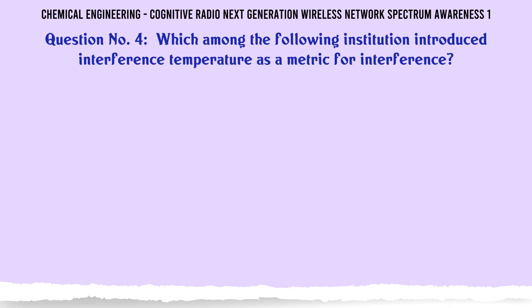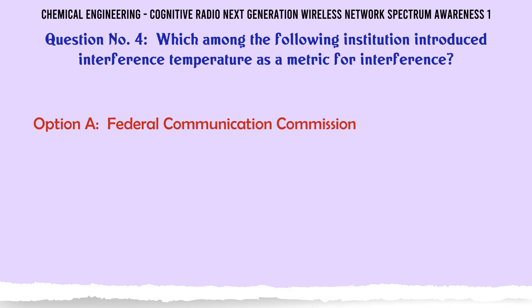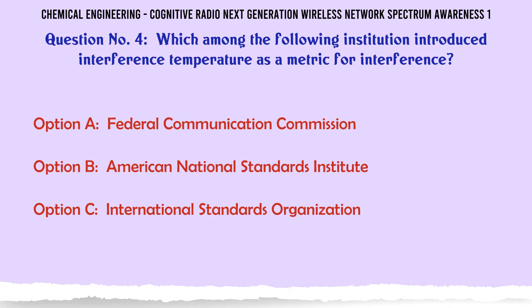Which among the following institution introduced interference temperature as a metric for interference? A. Federal Communication Commission. B. American National Standards Institute. C. International Standards Organization. D. British Standards Institute.